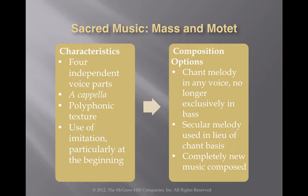In the Renaissance period, the mass and the motet are still around and still very popular genres of music for religious purposes. The characteristics of these types of music include four independent parts. They are still not accompanied with instruments, and polyphonic texture is pretty much the main characteristic of music of this time.